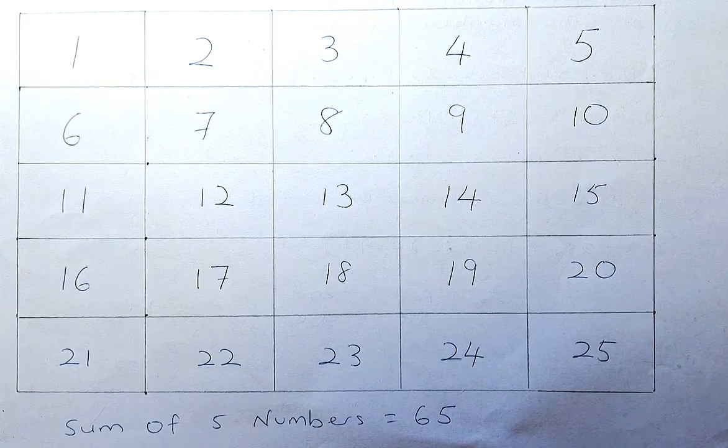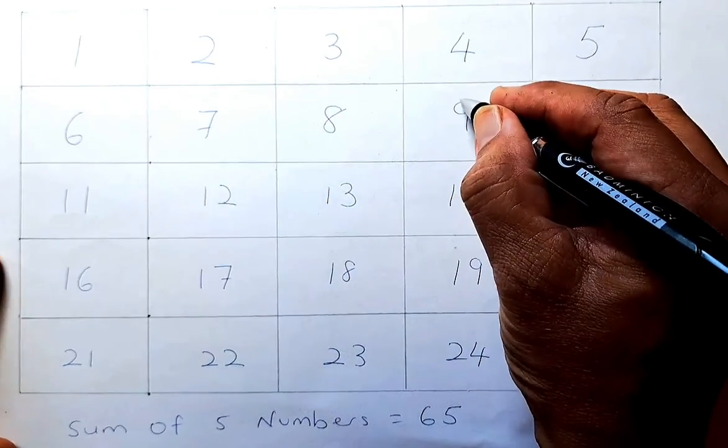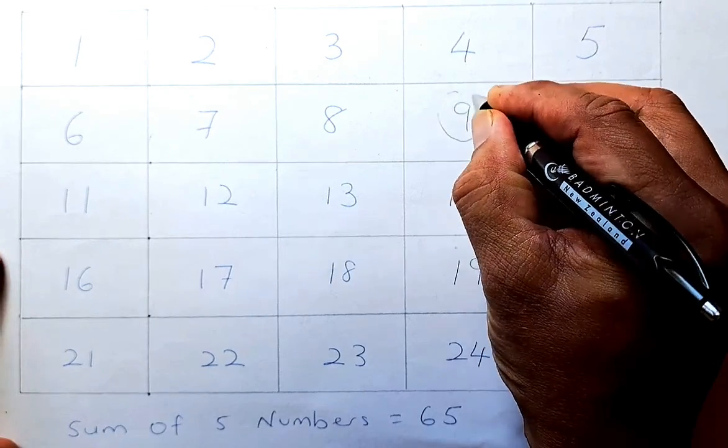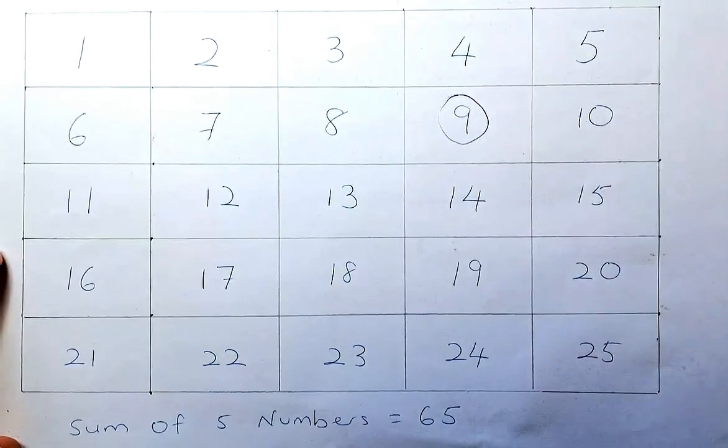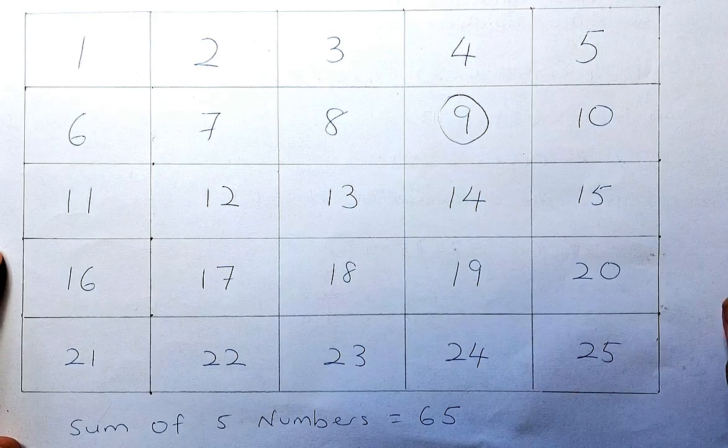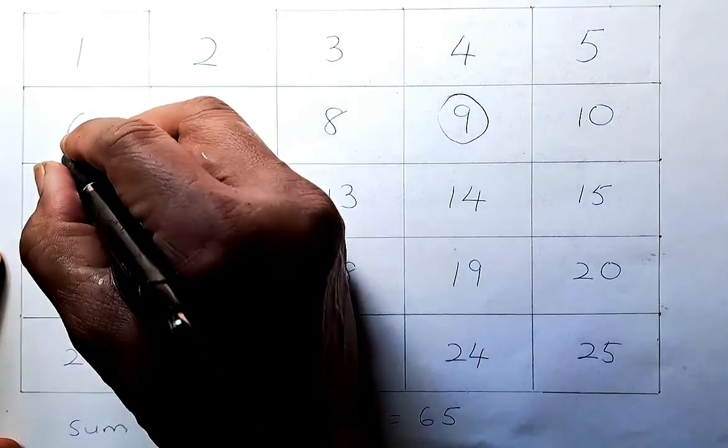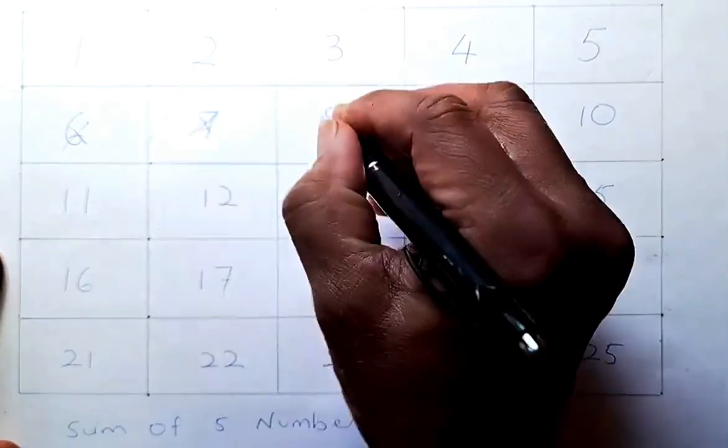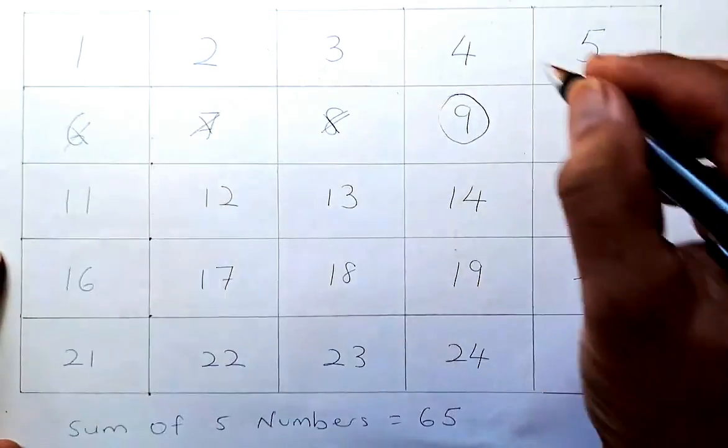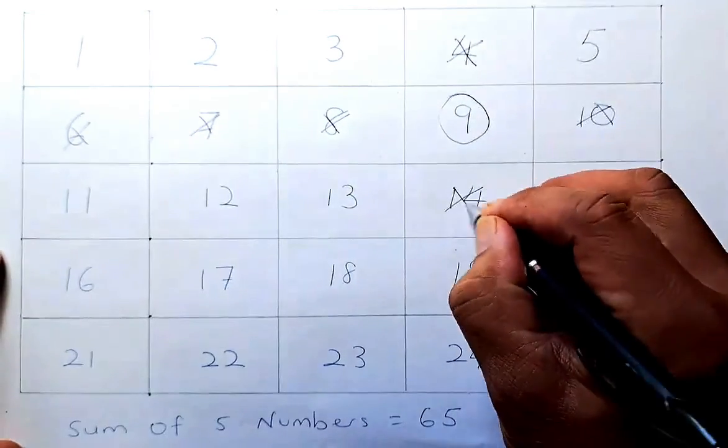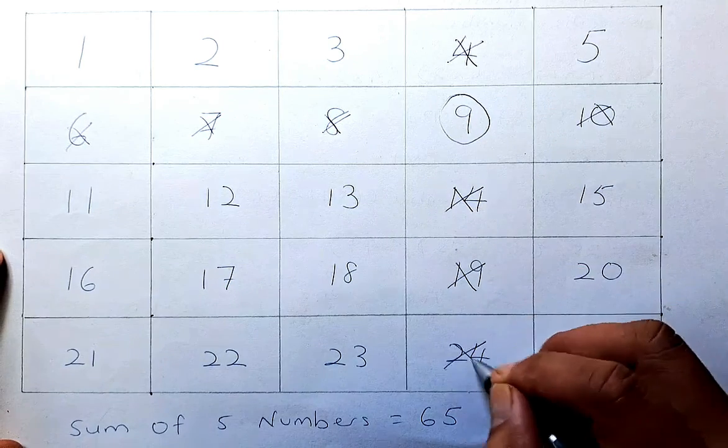So for example, if you start with number 9, you cannot choose the other numbers that are in the same row or same column. So 6 is out, 7 is out, 8 is out, 10 is out because they are in the same row. So it's 4, 14, 19, and 24.